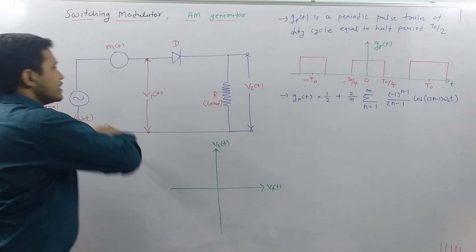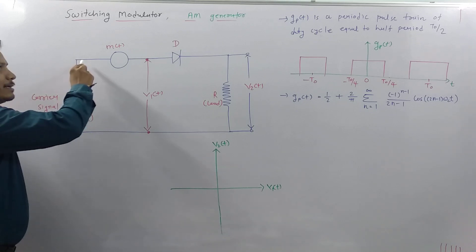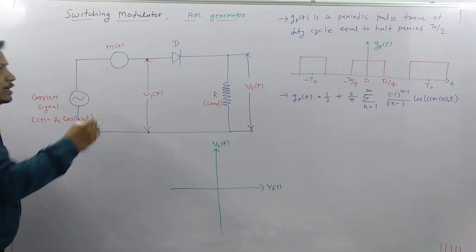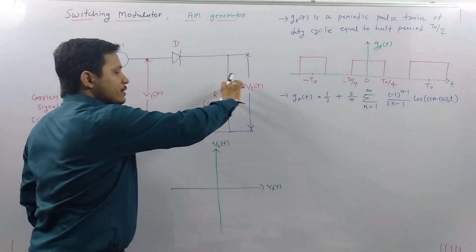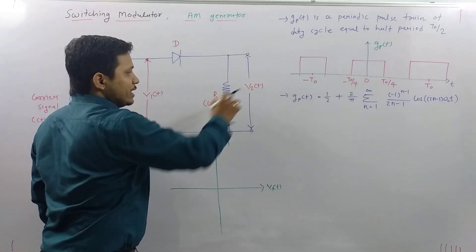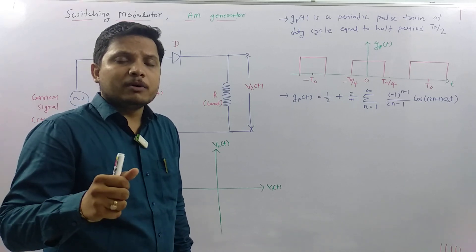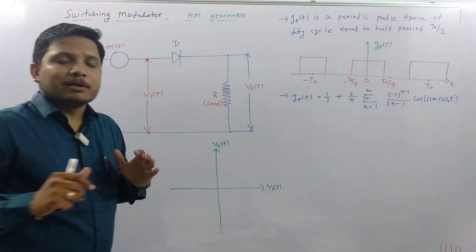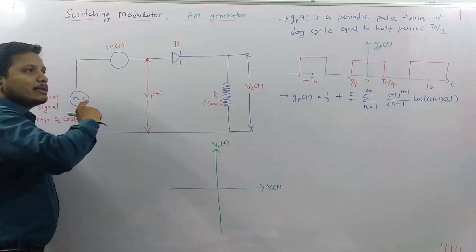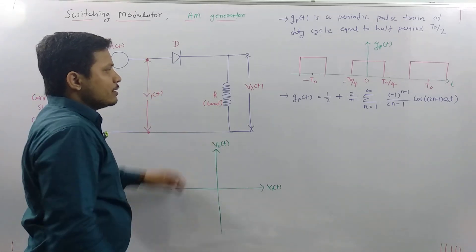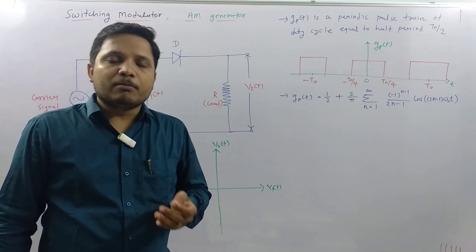Here if you see, this is the basic circuit of the switching modulator. We have a carrier signal connected in series with modulating signal MT, and this is connected with a diode in series, generating a signal V2T. If we pass this V2T signal through a band pass filter, then we can have an amplitude modulated signal.